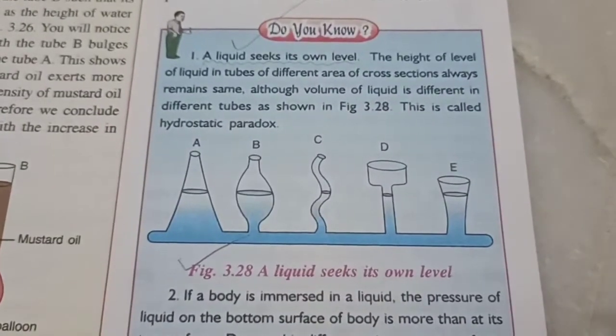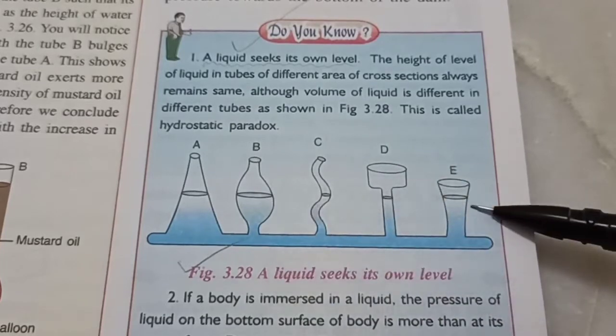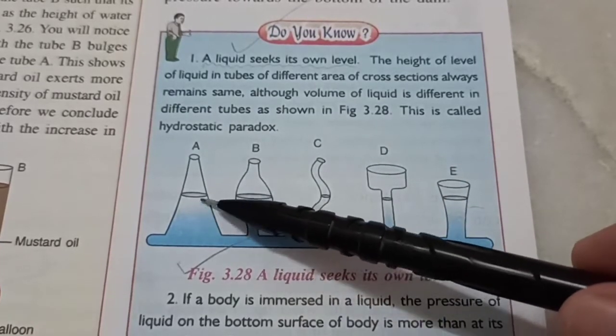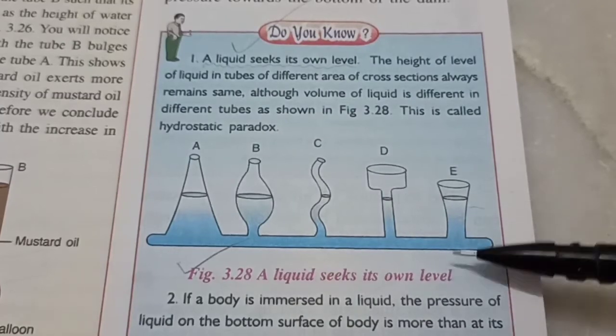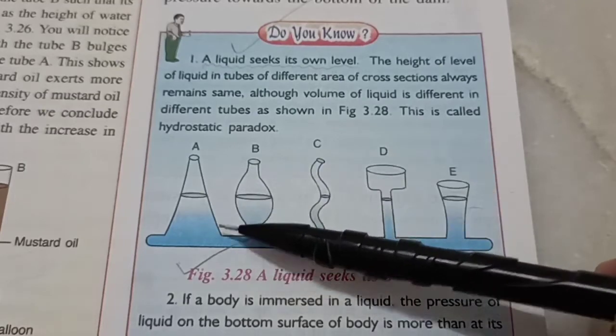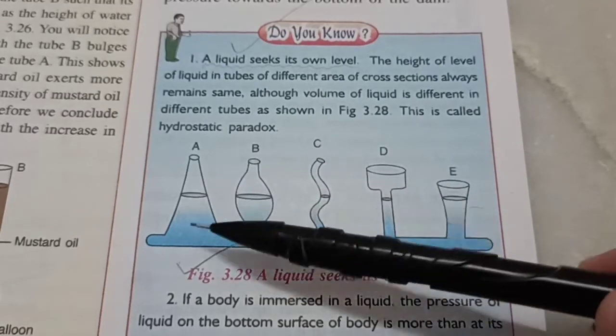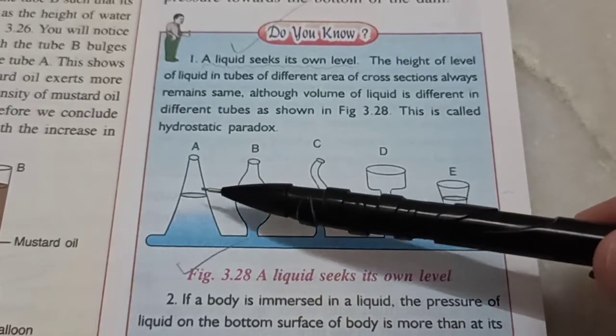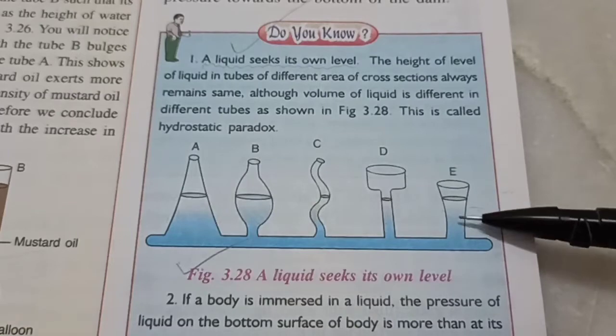Also, if you look at this picture, you will notice that even though the size of the containers are different, the level of water will be exactly same in all of them. This property is called a liquid seeks its own level. Yes, the volume of water is different in these containers, but that's irrelevant. What matters is the level is same because the pressure will be same. You see, same depth, same pressure. That's what should be equal.